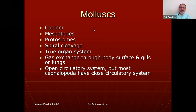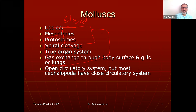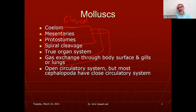In a closed circulatory system, the blood is always inside a vessel — from the heart, it goes to the aorta, artery, arterioles, capillary, venules, vein, and then back into the heart.